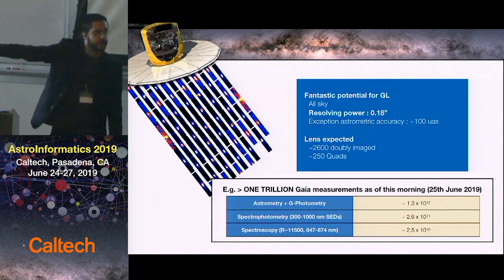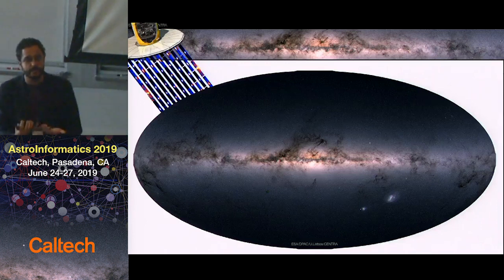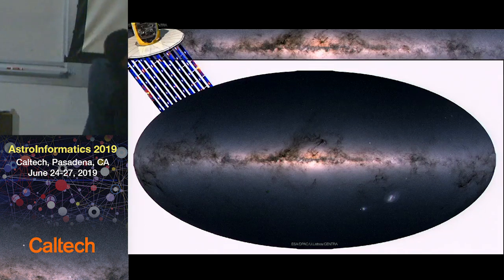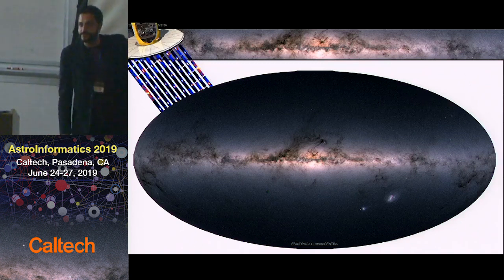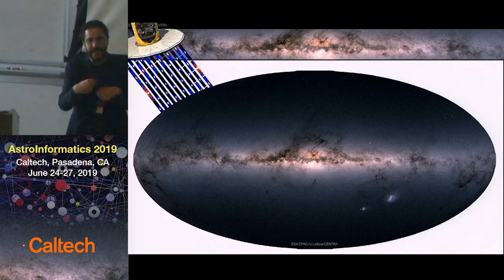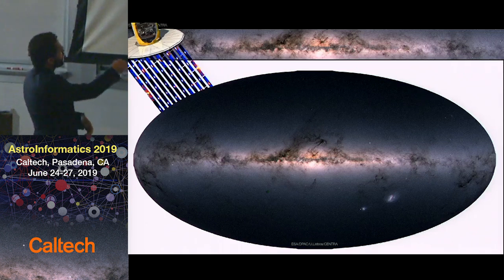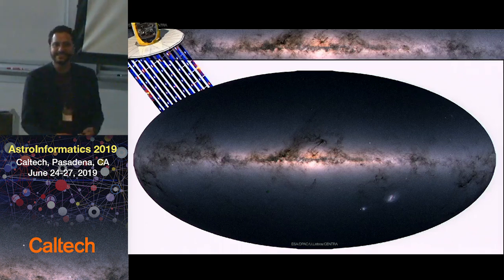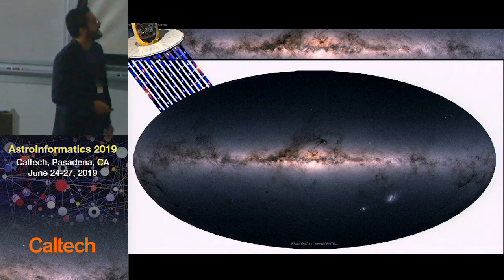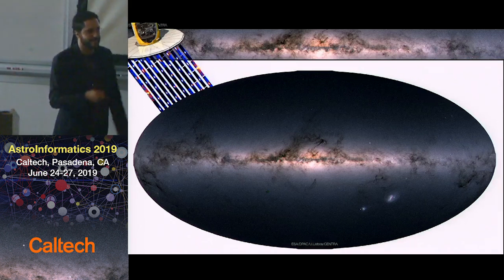Currently we are working with 1.8 billion objects from Gaia data release 2. The visualization shown is not an actual image of the sky — it's essentially a scatter plot of the Gaia catalog contents. If you add the flux of all points within each pixel, you reconstruct a perfect image. It's amazing to see a catalog visualization that creates an image as realistic as this one.